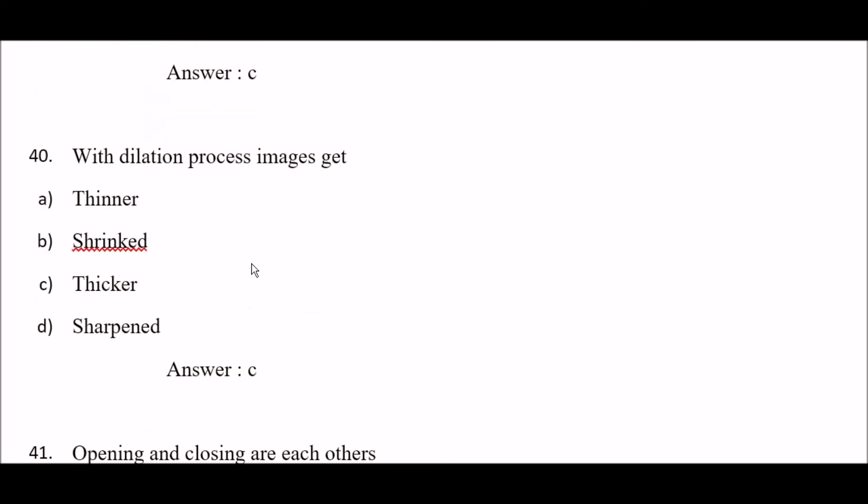Next question: with the dilation process, images get — option A: thinner, option B: shrunk, option C: thicker, option D: sharpened. The right answer is option C — thicker.